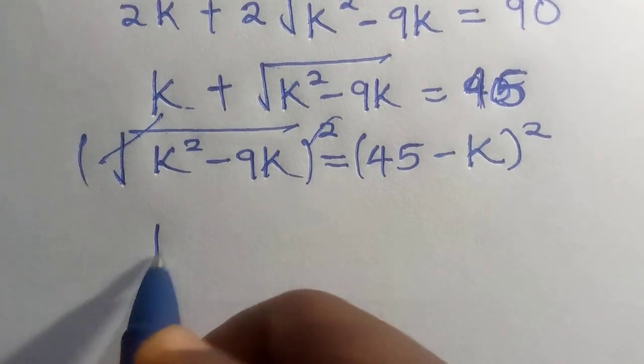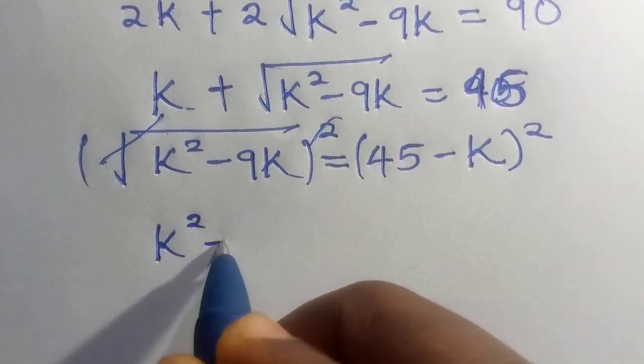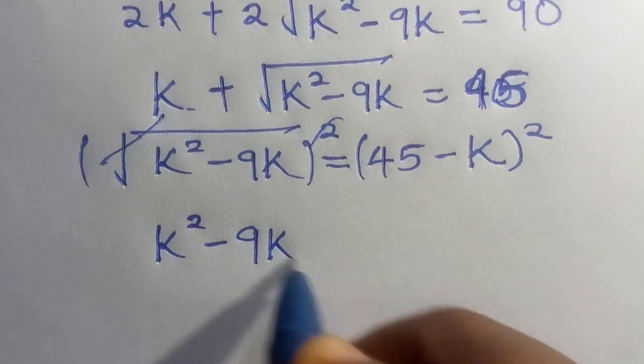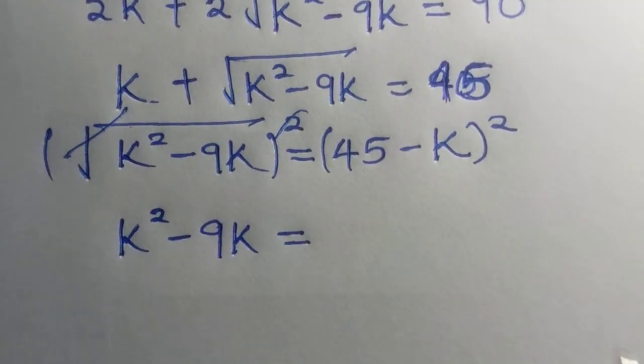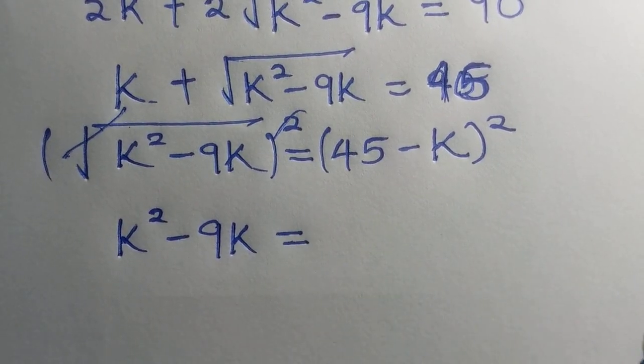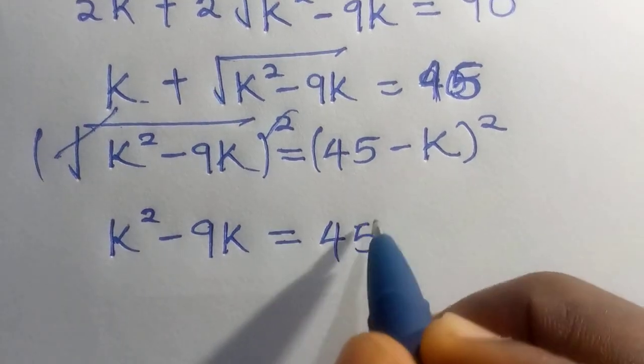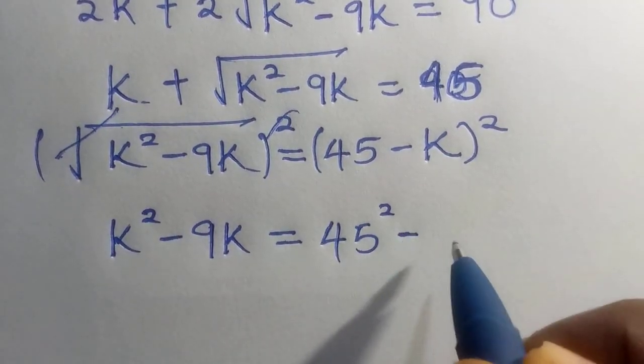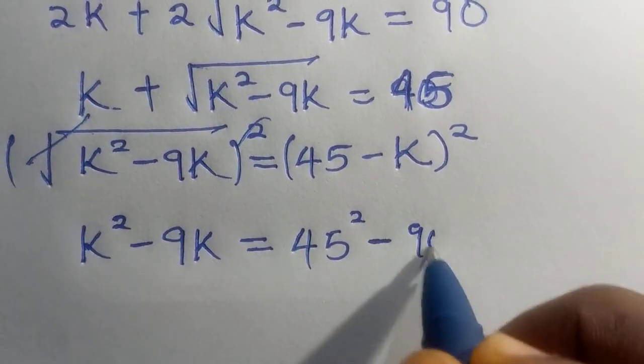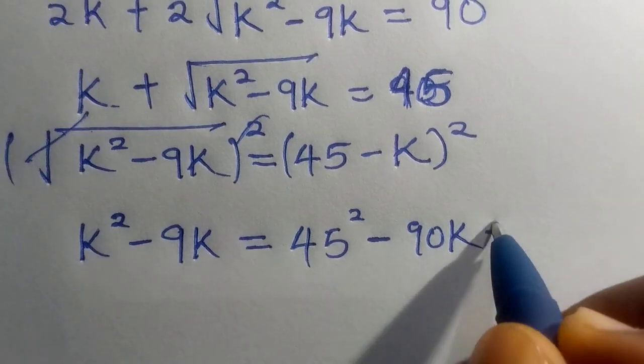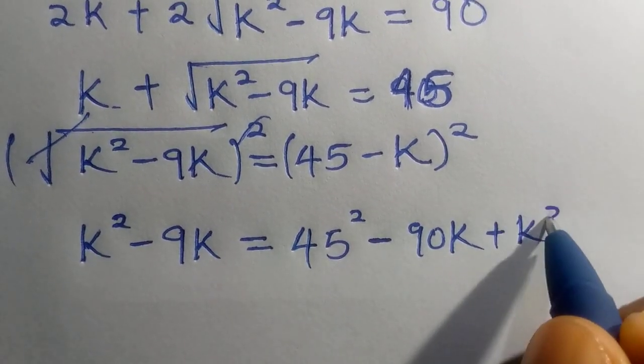then we have k square minus 9k equals, let's try to expand 45 minus k square, we have it as 45 square minus, here we have it as 90k plus k square.